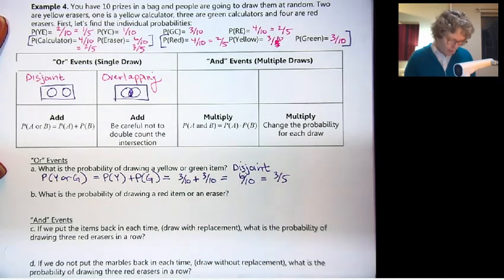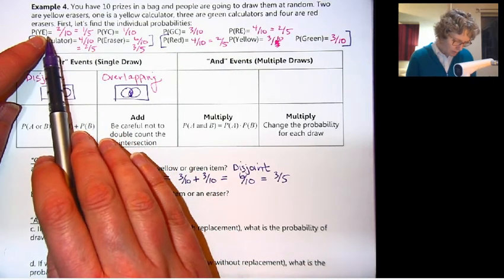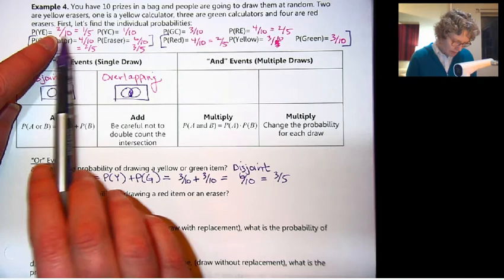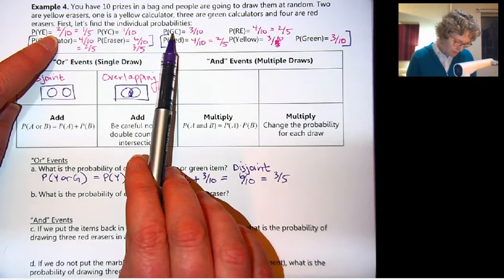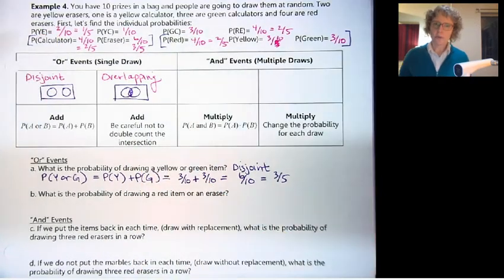We have our colors over here, and these are disjoint. The probability of yellow is 3 tenths, plus the probability of green is 3 tenths. So yellow OR green altogether is 6 tenths, or 3 fifths. When you say OR, you're increasing your possibility. So that's why the probability gets larger.